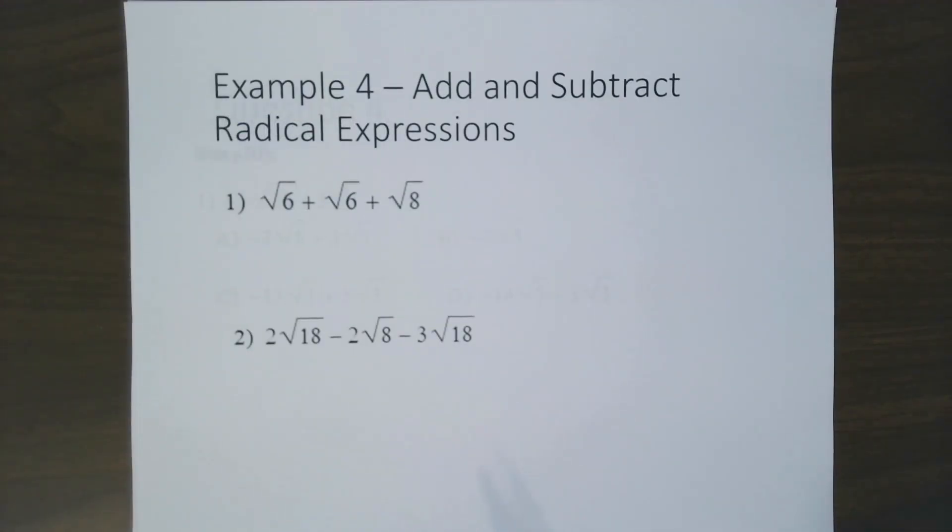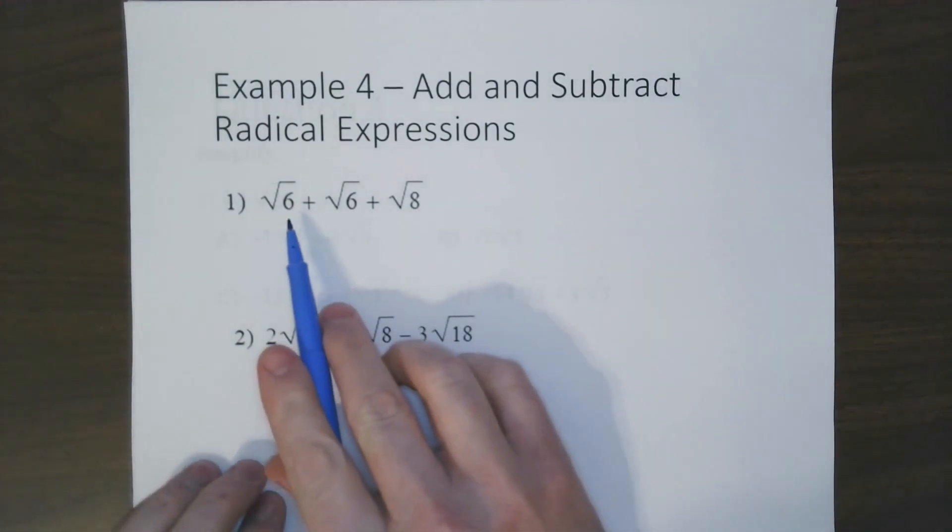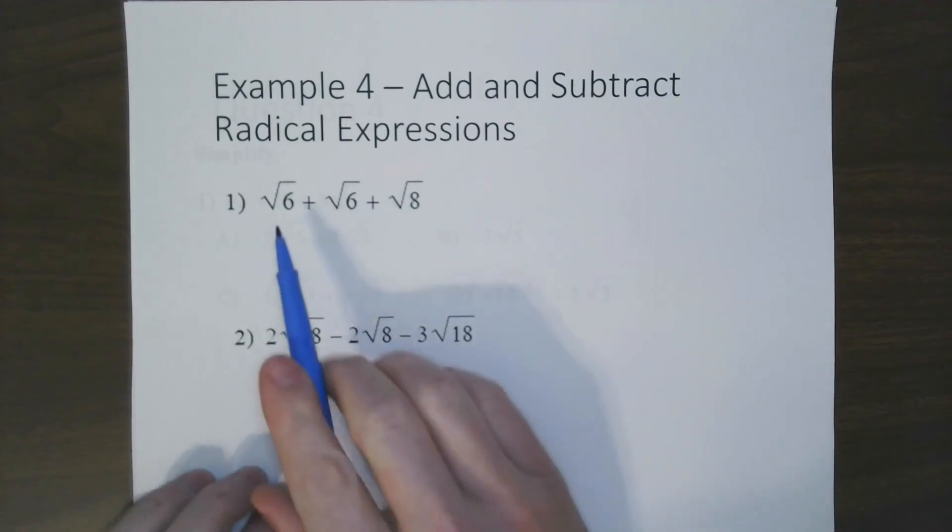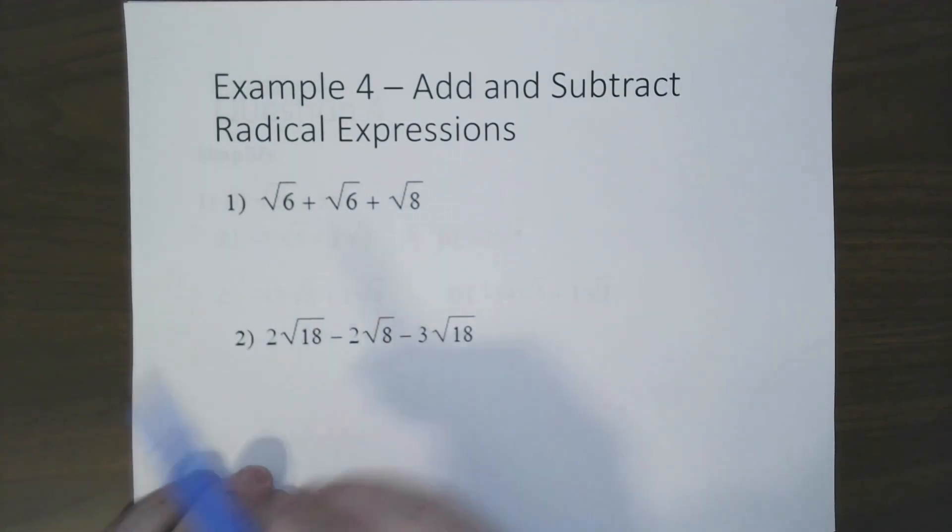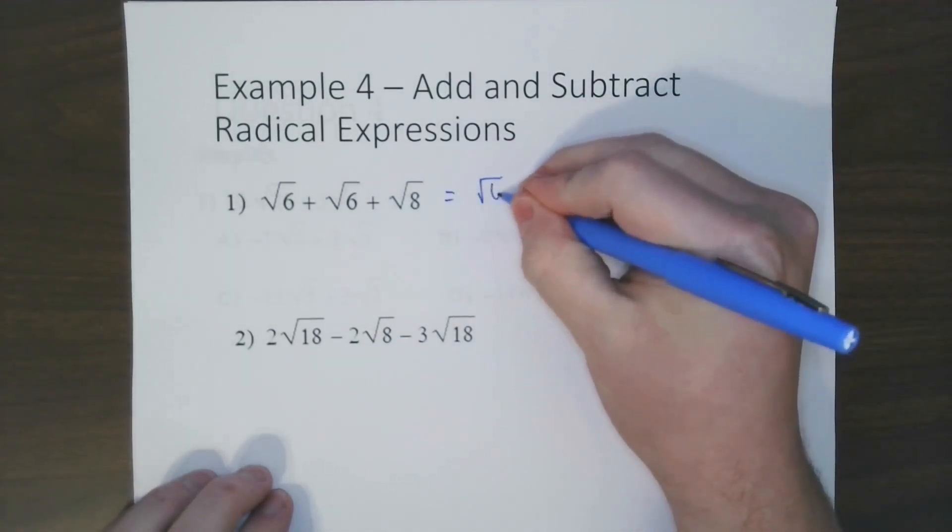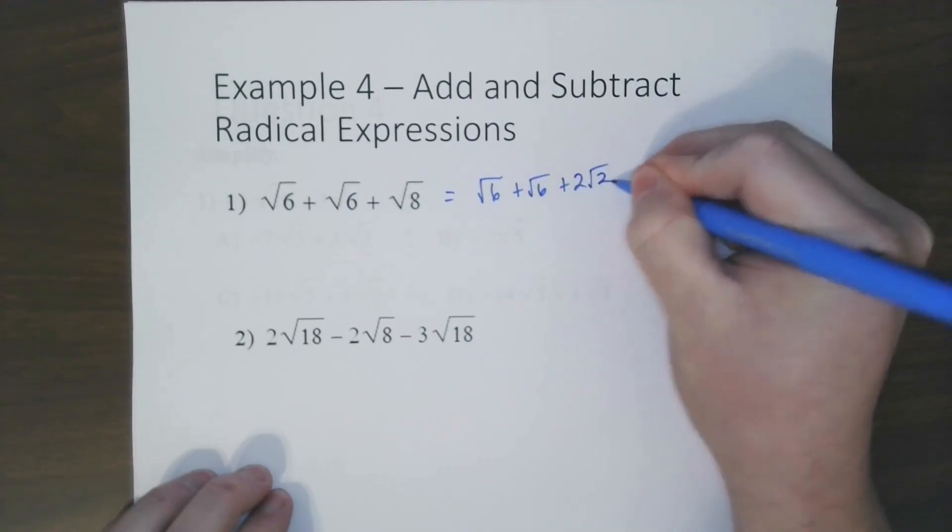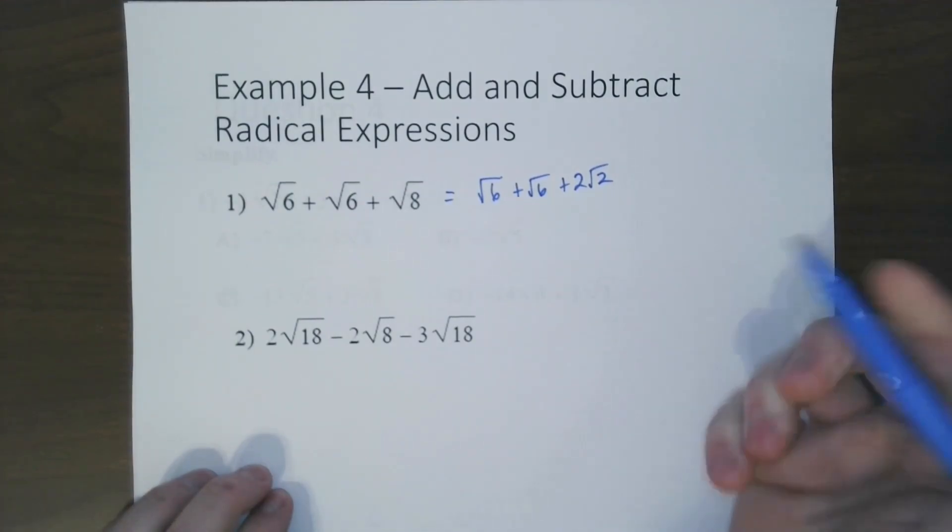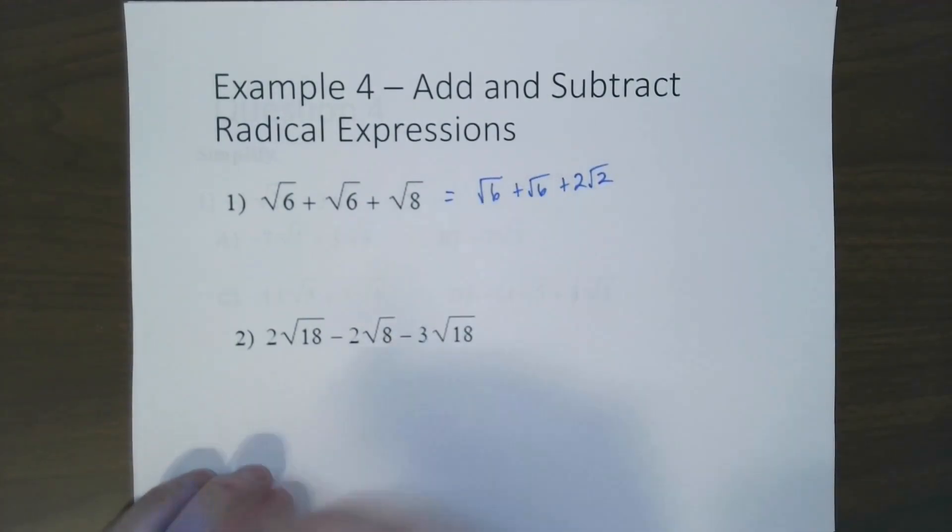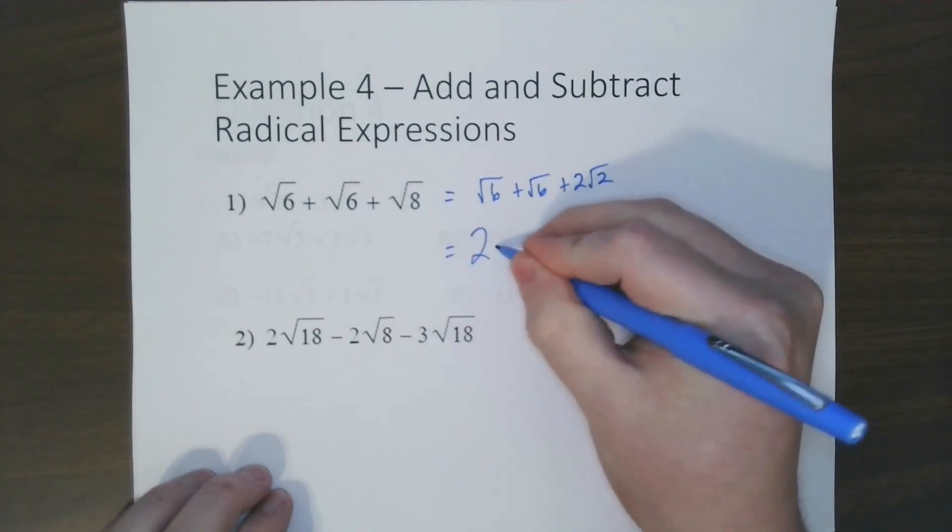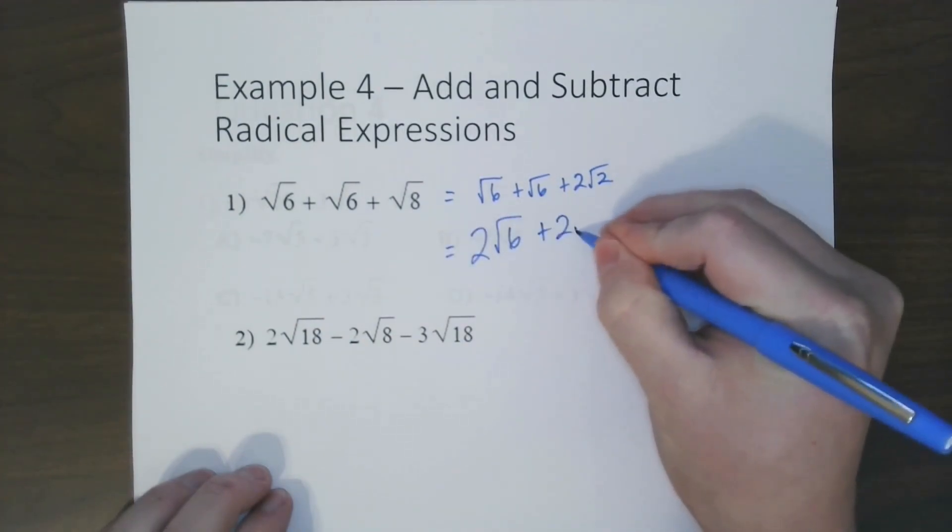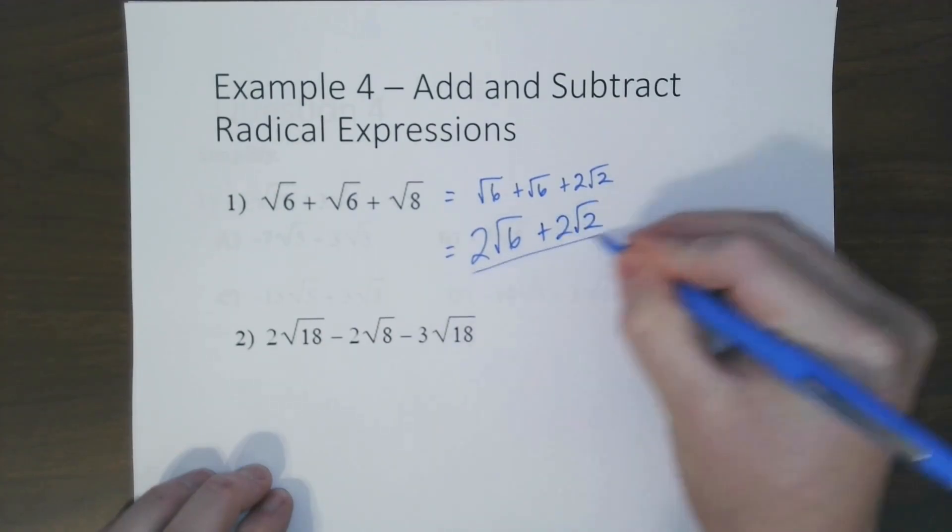Now we're going to add and subtract radical expressions. So the key thing is we're just going to simplify and then combine like terms. So we look through each of these radicals and we see if we can simplify. Radical 6 does not simplify whatsoever. So we are going to simplify radical 8. This gives us radical 6 plus radical 6 plus 2 radical 2. Now combining like terms, we have 2 radical 6's. So we write 2 radical 6 plus 2 radical 2. And that is our answer. The only way you can combine them is if these radicals are exactly the same.